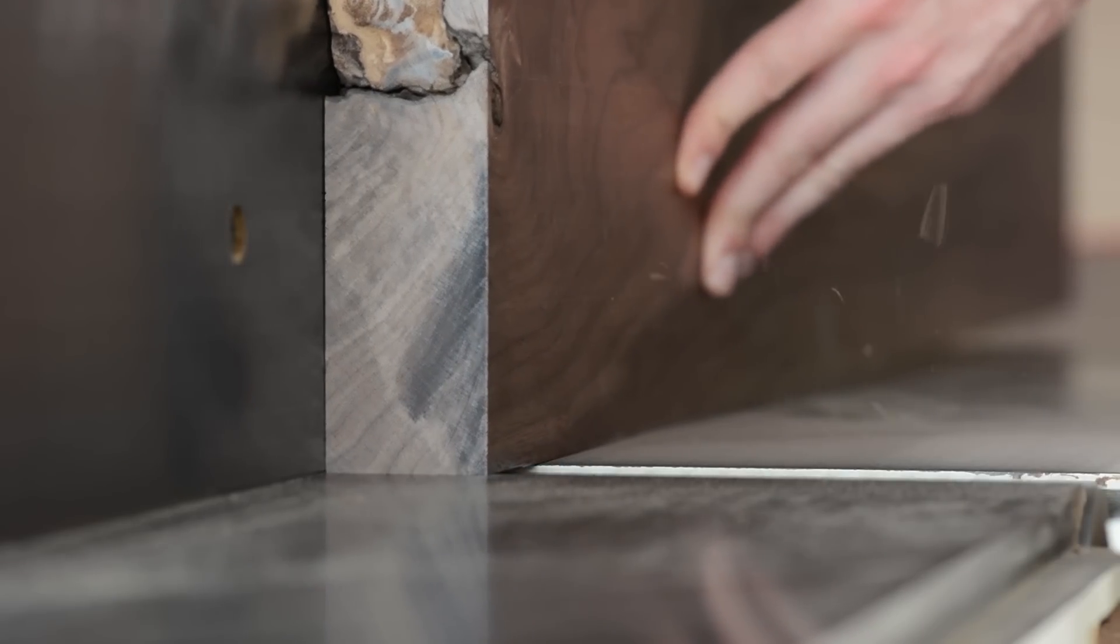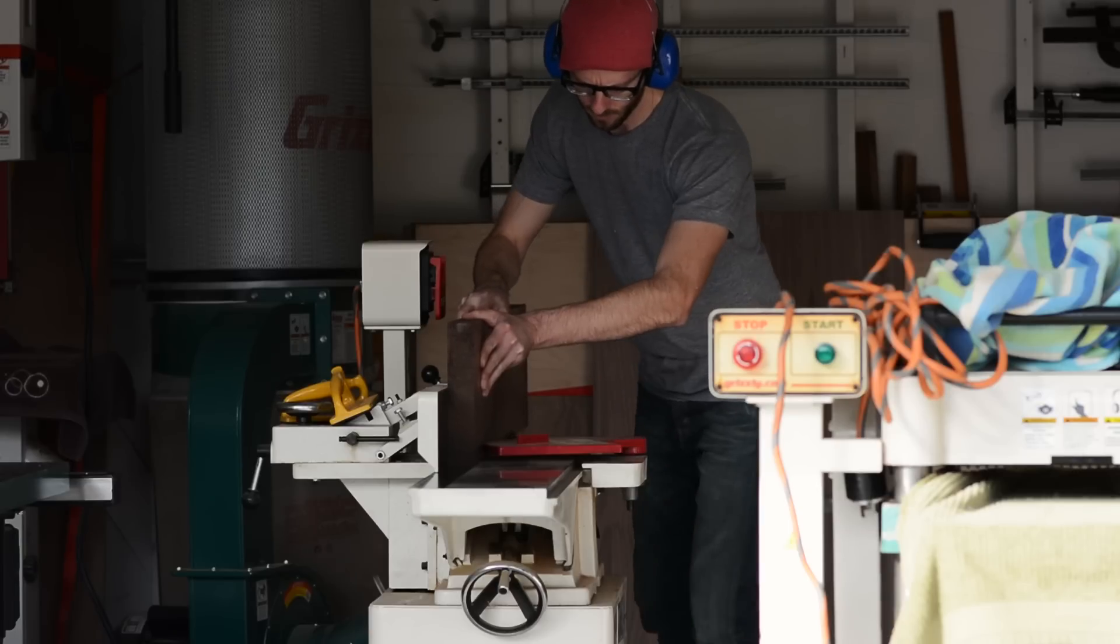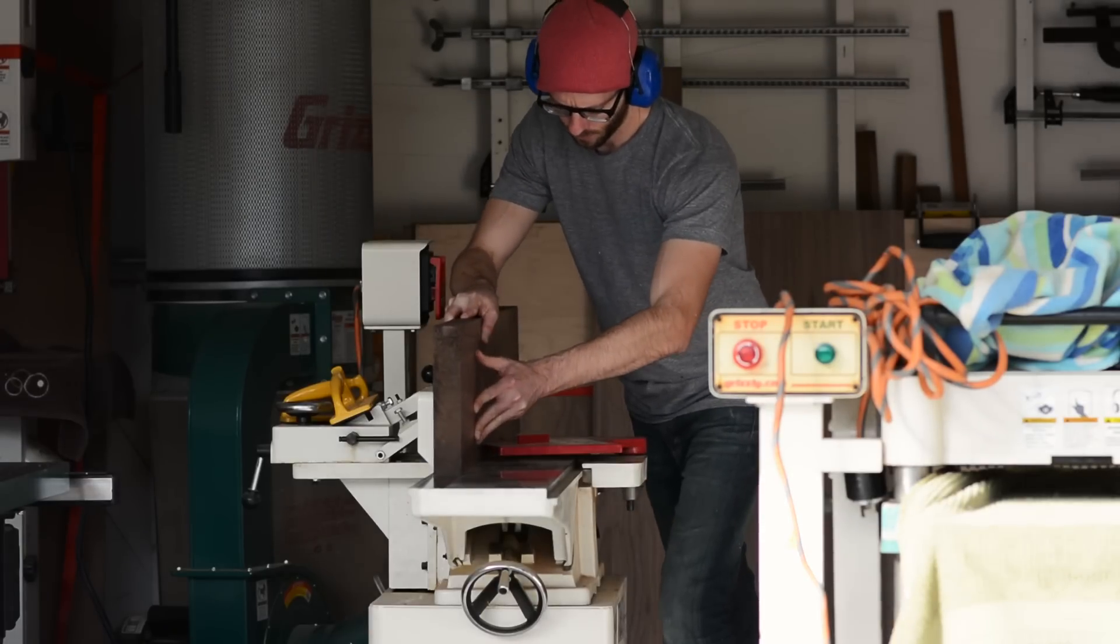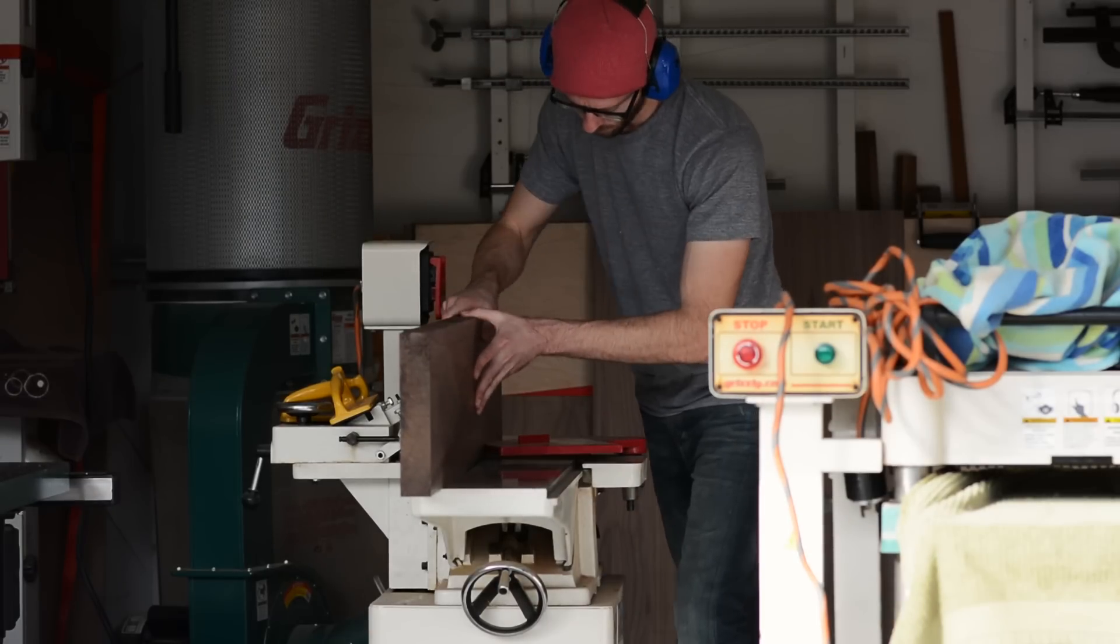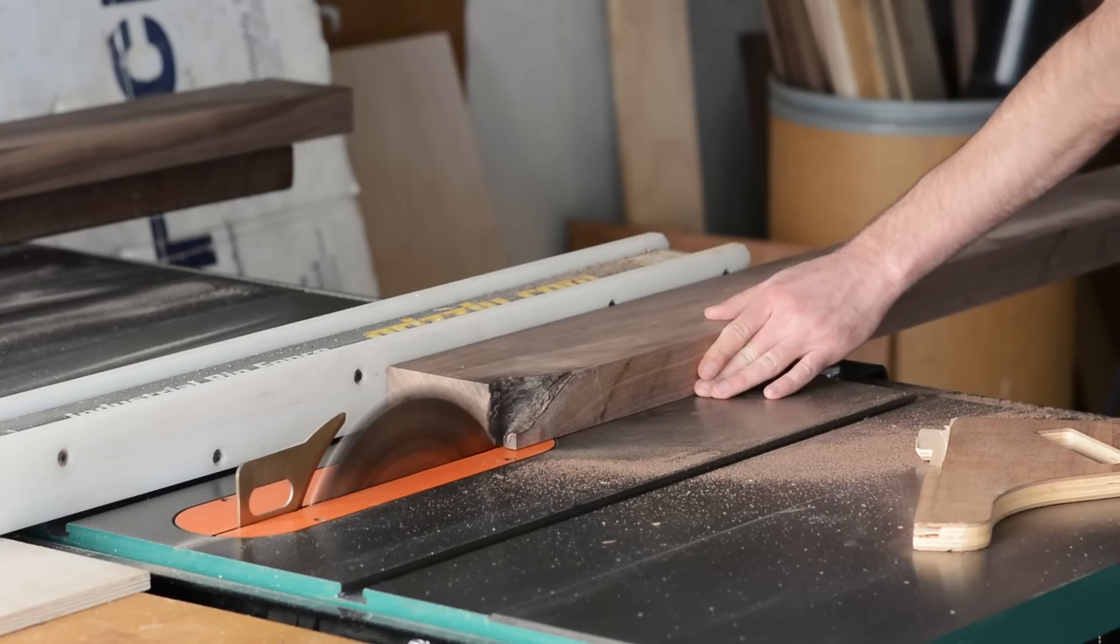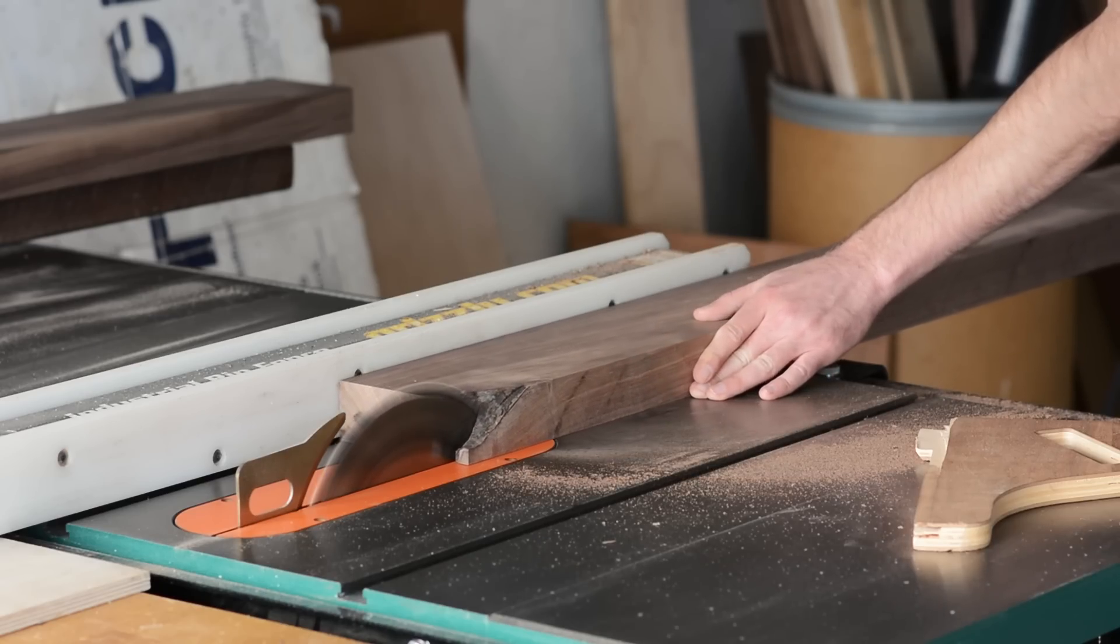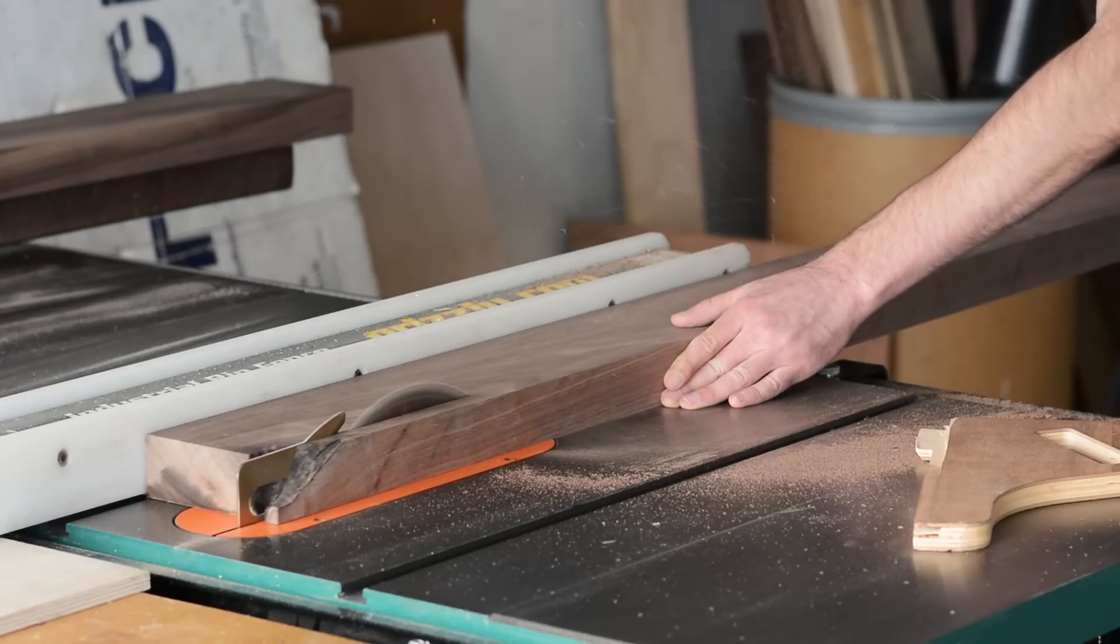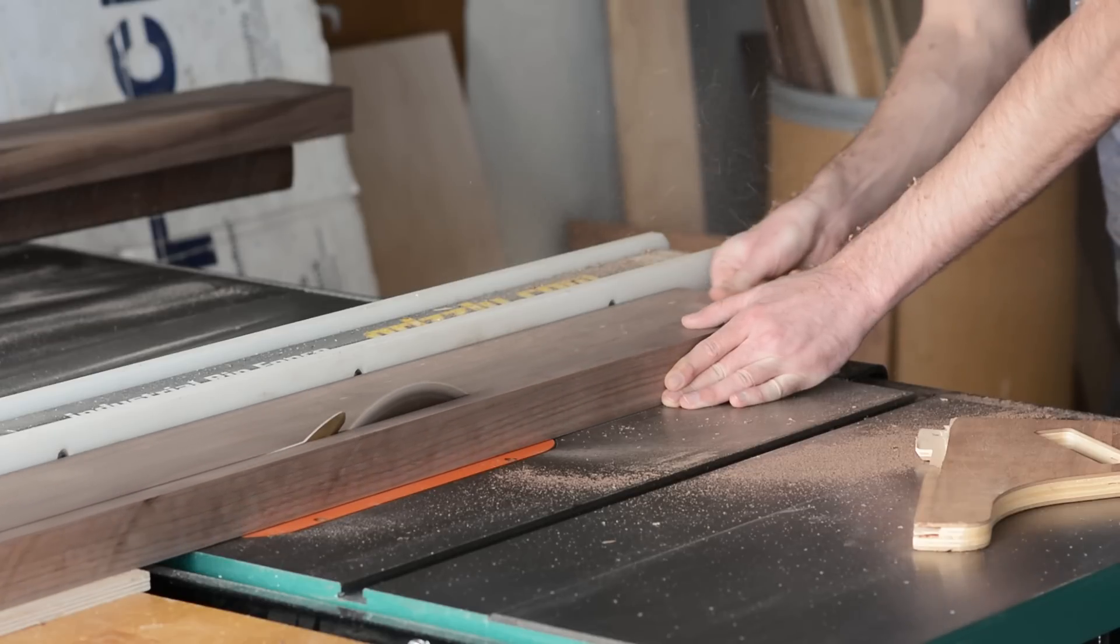I started by joining one edge of the walnut. Then I ripped the walnut into oversized strips. I left the finished pieces about a quarter of an inch wider than I wanted them with the intention of getting them down to their final size once I had laminated the pieces together.